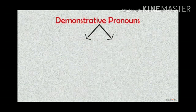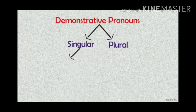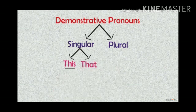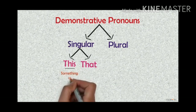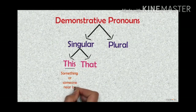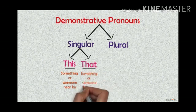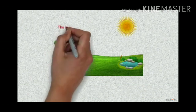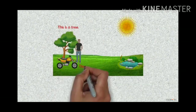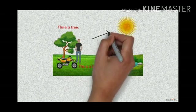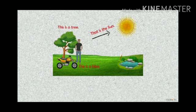Demonstrative pronouns are divided into singular and plural. This and that are singular demonstrative pronouns. This is used for something or someone nearby; that is used for something or someone that is far away. Look at the examples: this is a tree, this is a bike — and that is the Sun, that is a pond.